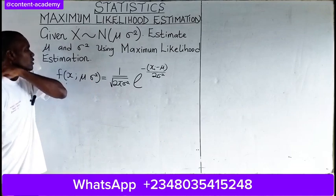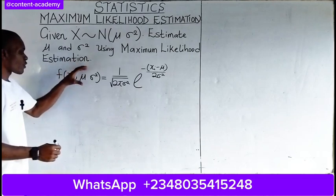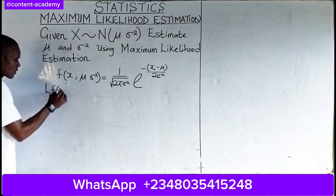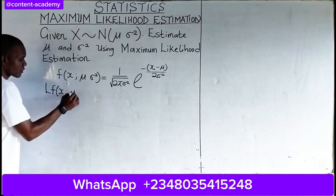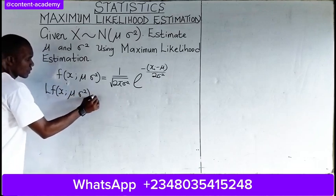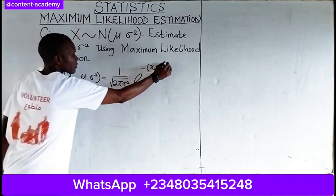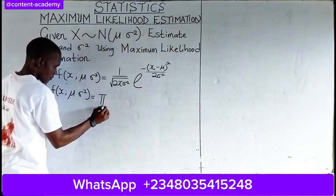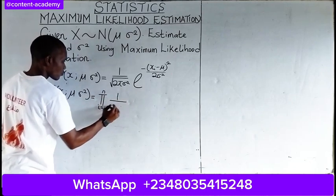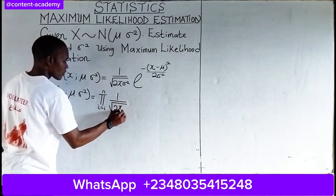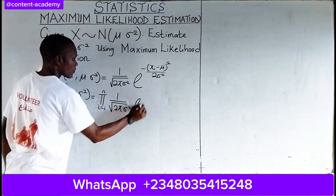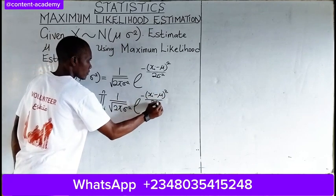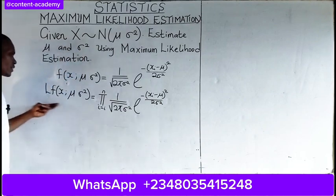What do we do? The first thing to do is to take the likelihood function. The likelihood function is given as the product sum of any function, and we are taking the product sum of this normal distribution. So this is the likelihood function.